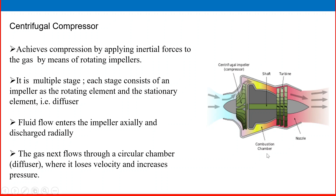The diffuser is present in the system. Fluid flow enters the impeller axially and is discharged radially. We will study this in detail one by one. The gas then flows through a circular chamber diffuser, where it loses velocity and increases pressure.